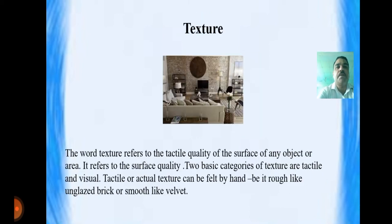The third element is texture. The word texture refers to the tactile quality of the surface of any object or area. It refers to the surface quality. Two basic categories of texture are tactile and visual. Tactile or actual texture can be felt by hand, being rough like unglazed brick or smooth like velvet.